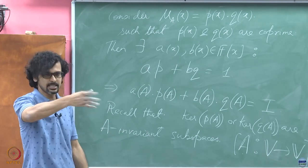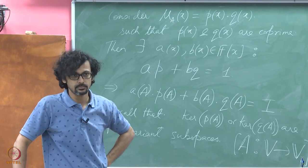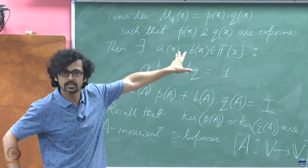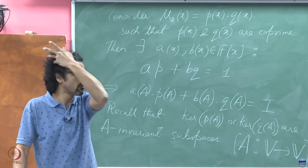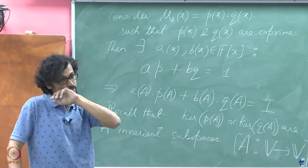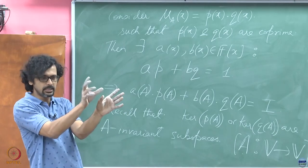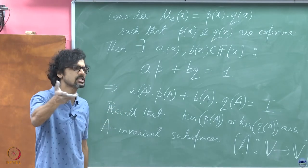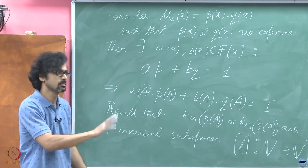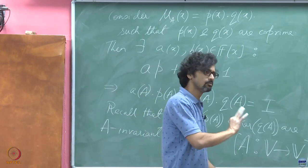Eventually we will be able to show an indirect proof of the Cayley-Hamilton theorem. The field F is algebraically closed — that is the standing assumption. We will talk about the complex Jordan form, since the field of complex numbers is algebraically closed, so you can split the minimal polynomial into first degree polynomials. This is what we shall prove in the next module.